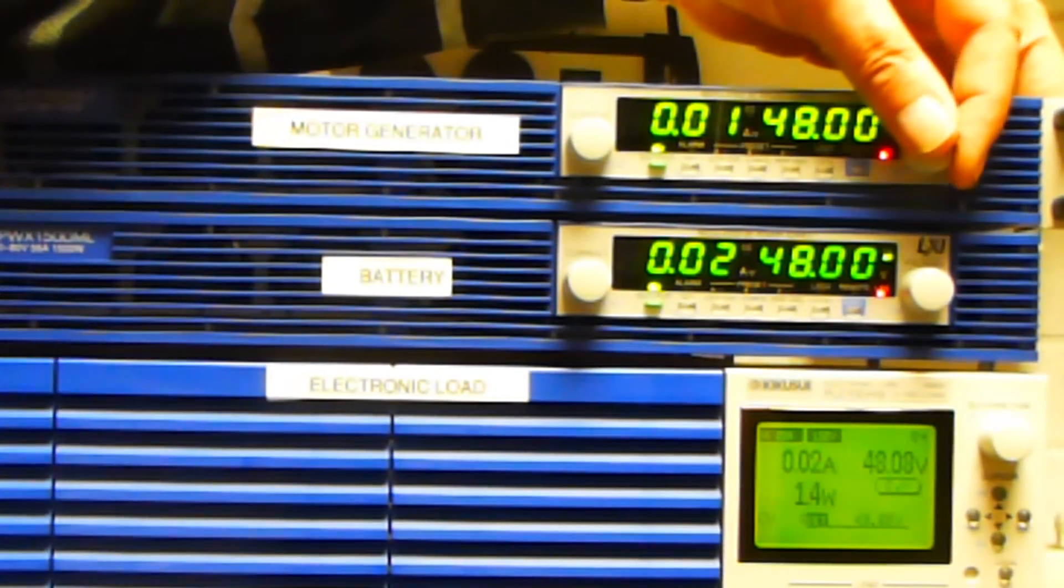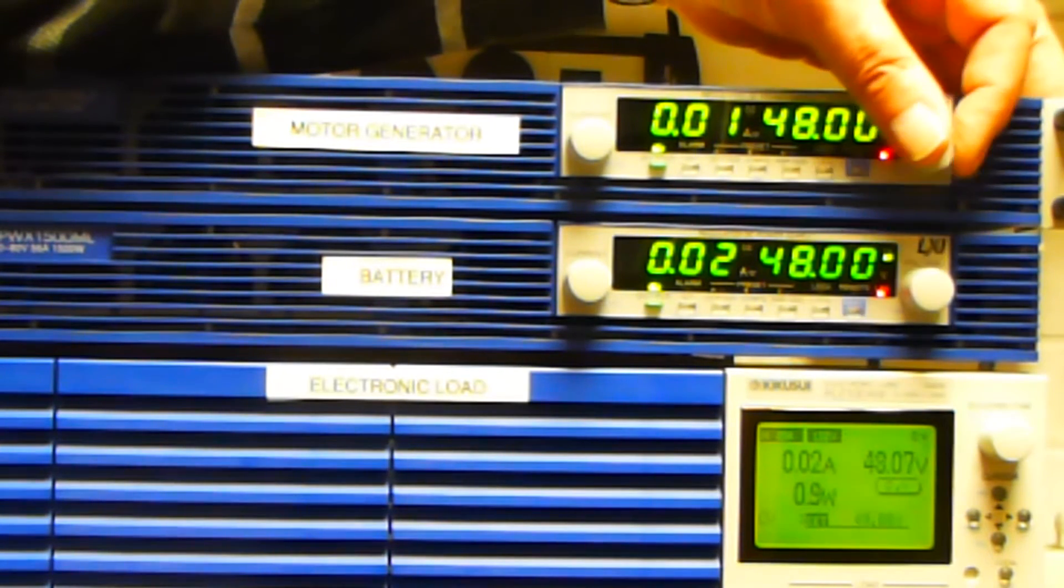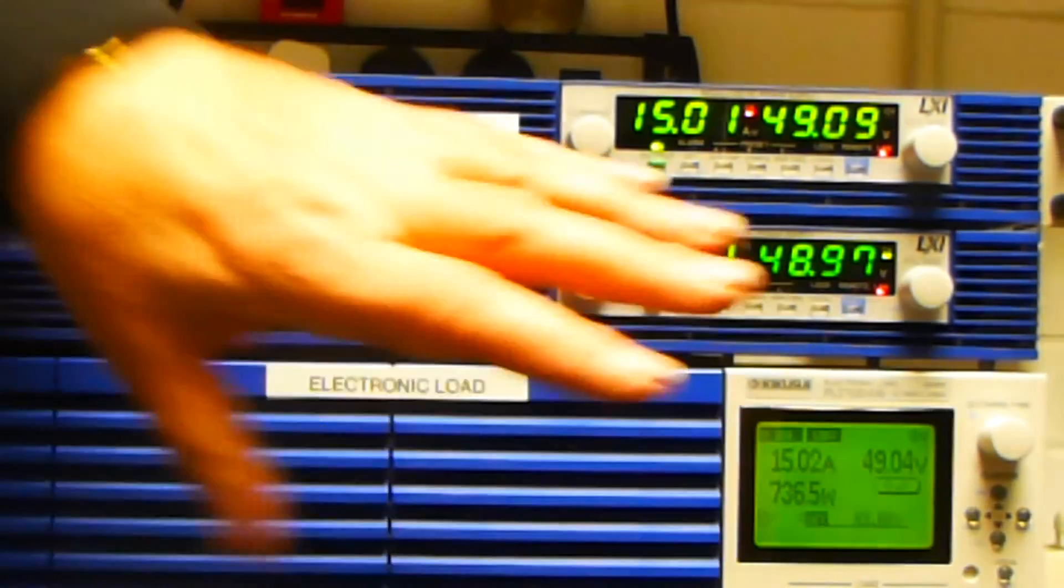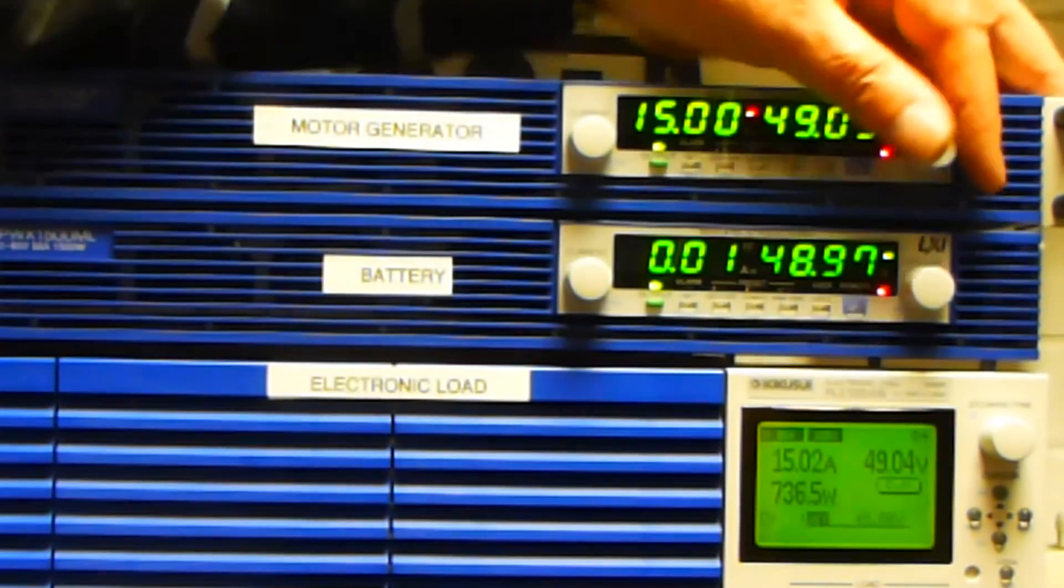If we speed the motor up, like this, it's past 49 volts, the electronic load is conducting and transferring energy back into the battery or the super capacitor or whatever we're using.